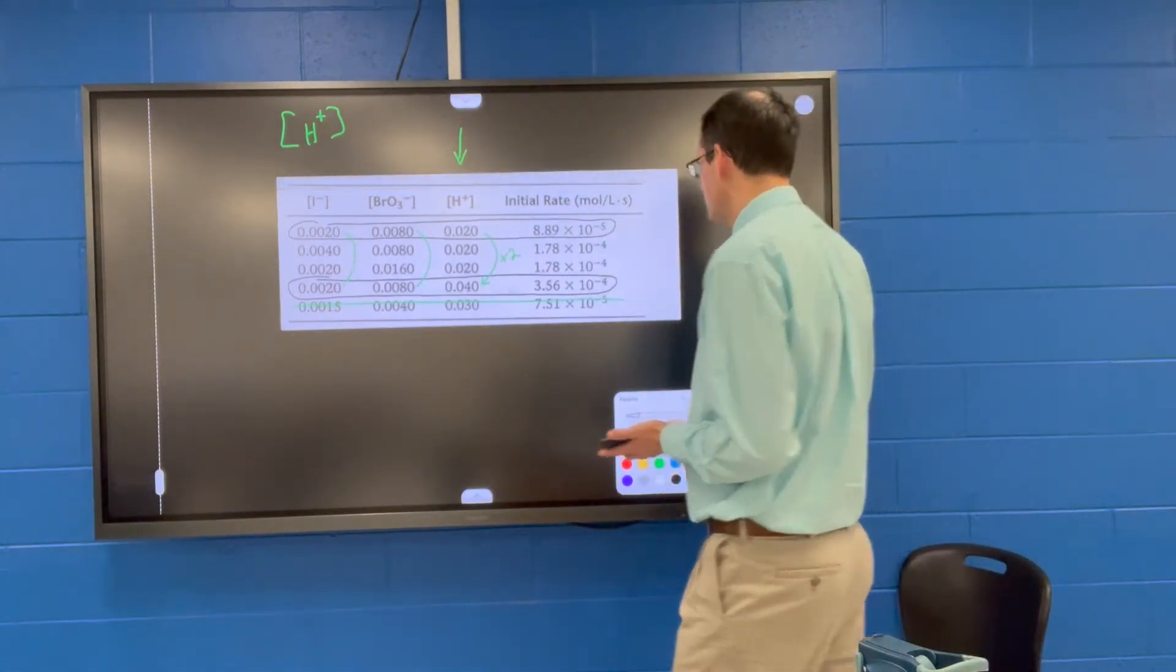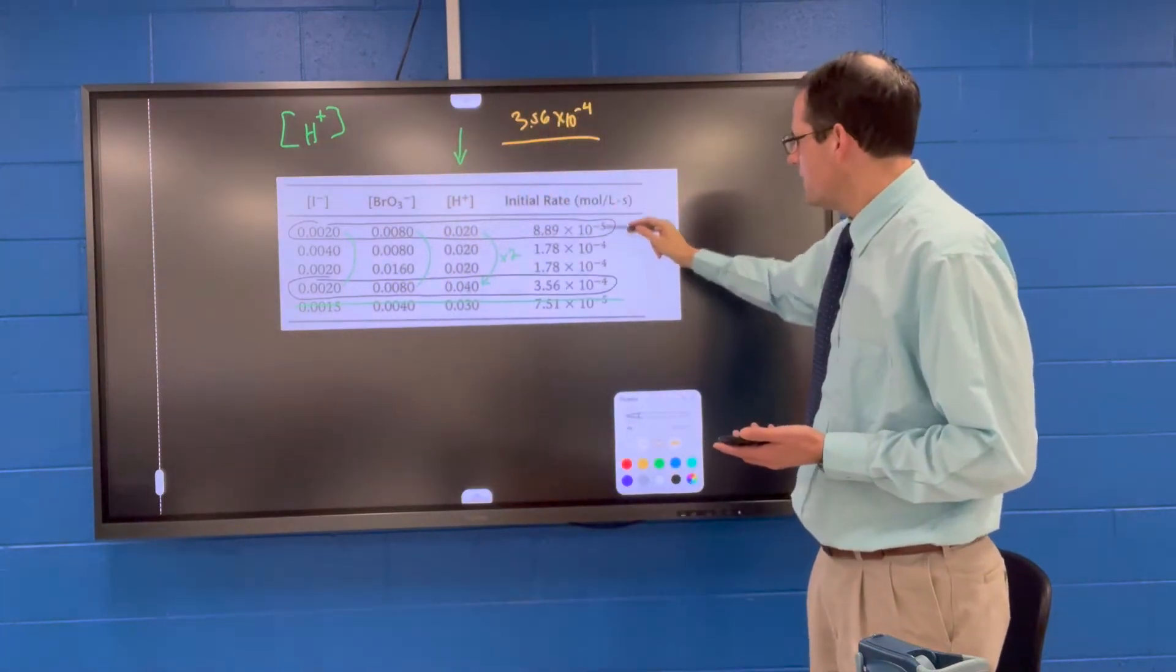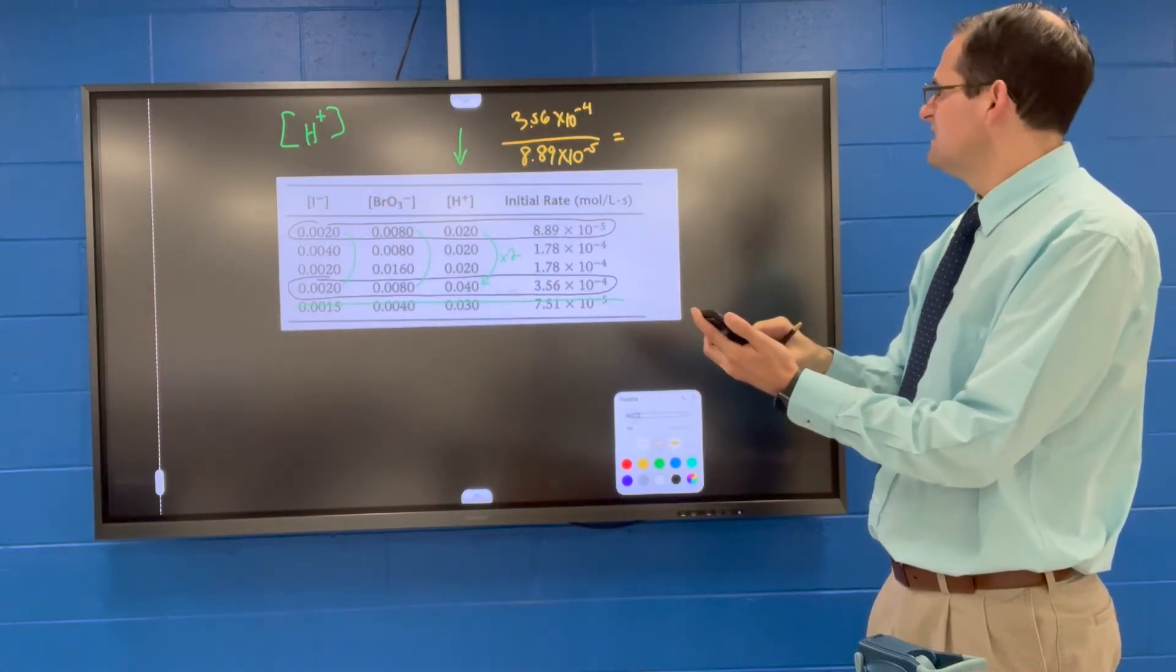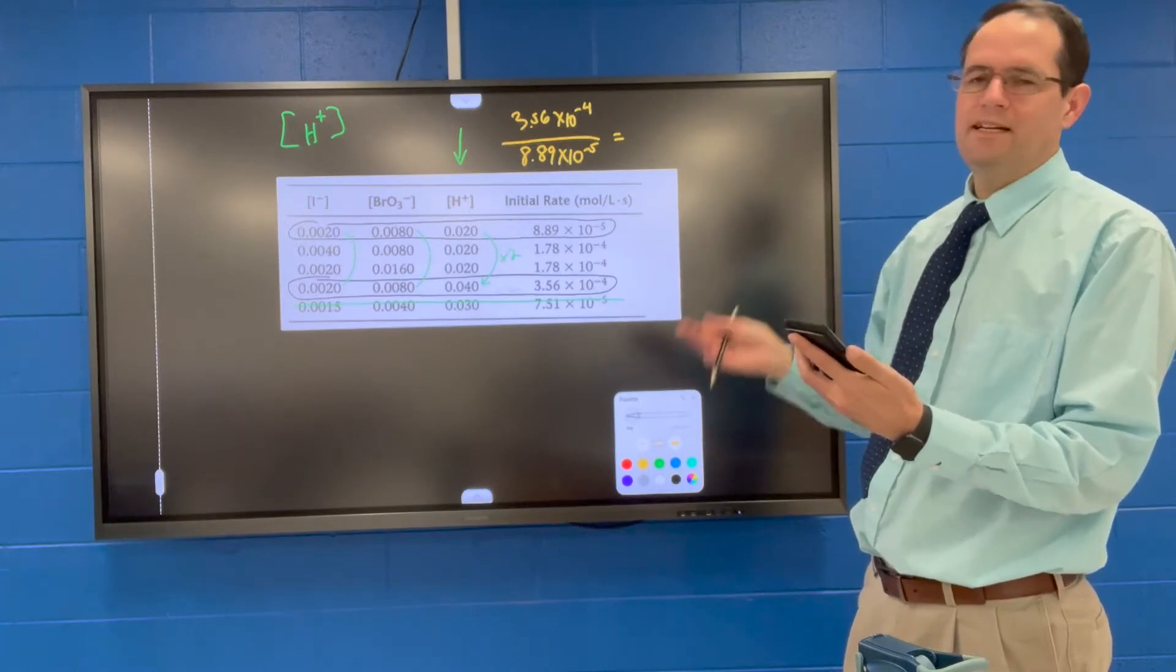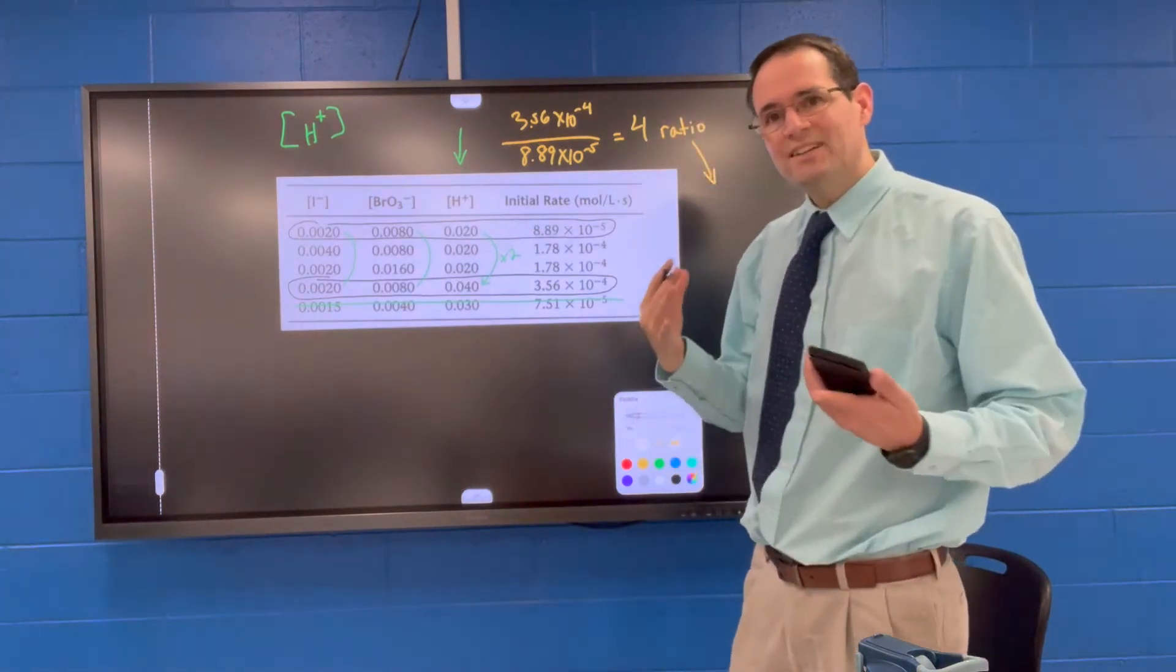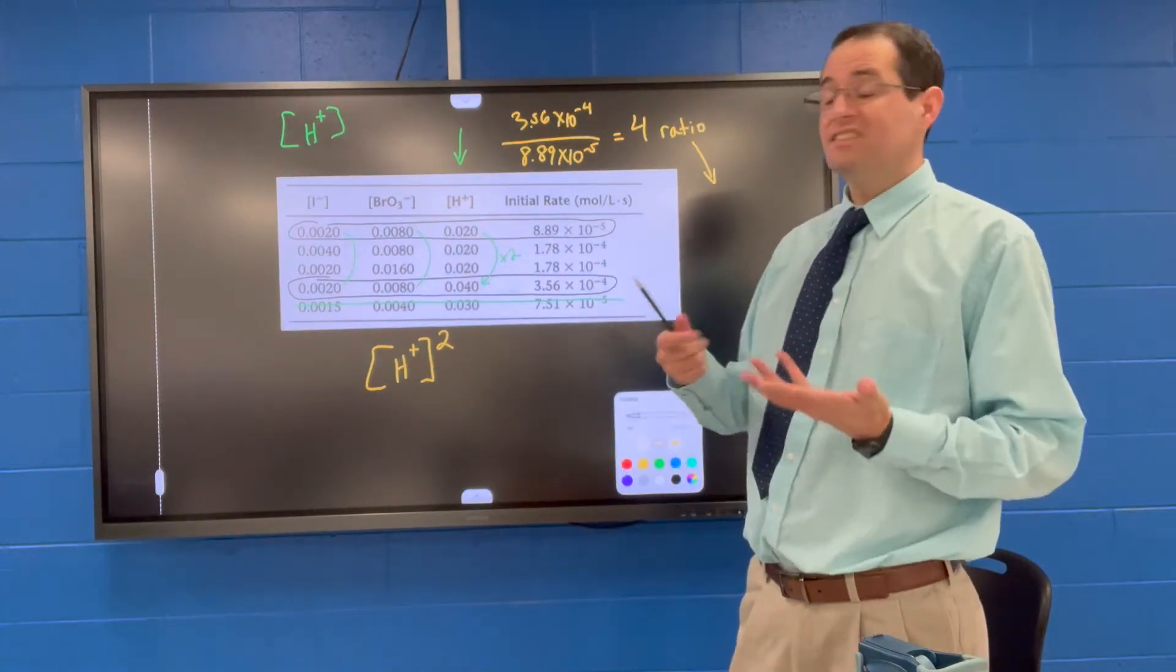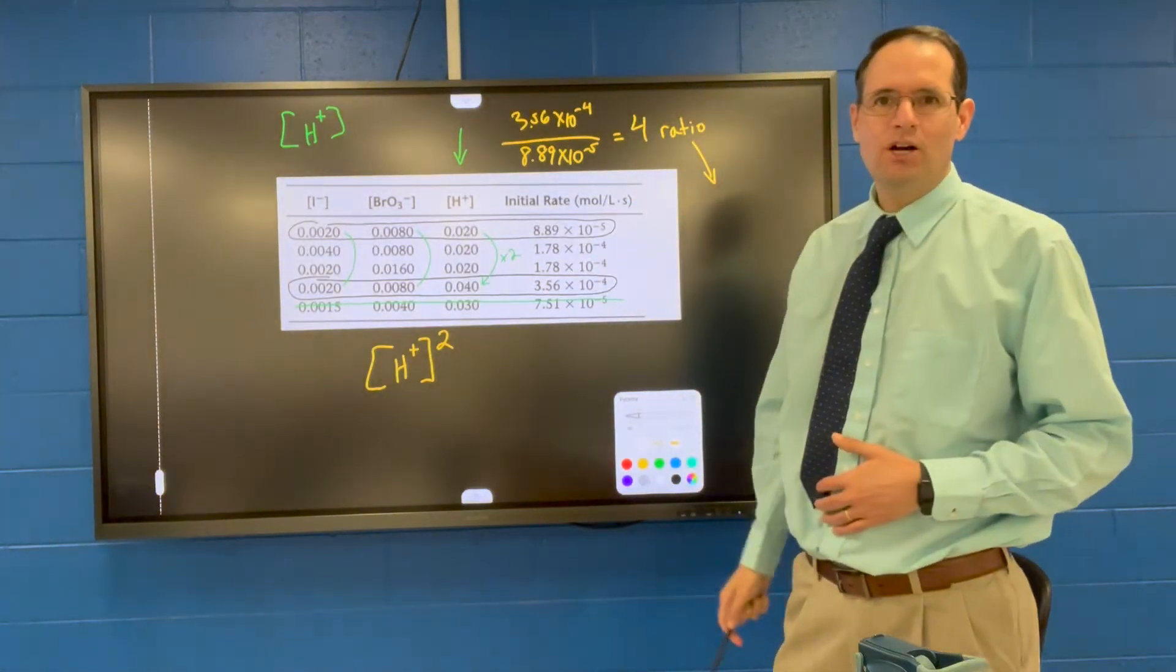So now we want to calculate the ratio of rates here. We want to take the larger rate and divide it by the smaller rate. And what we get is 4. We get 4.004499438. So a ratio of 4 means that it's second order. Why is it second order? Because when the concentration goes up by two, we square that and it actually is going to increase by a factor of four. So we are doubling the concentration, but since it's squared, the rate is actually going up by times four.